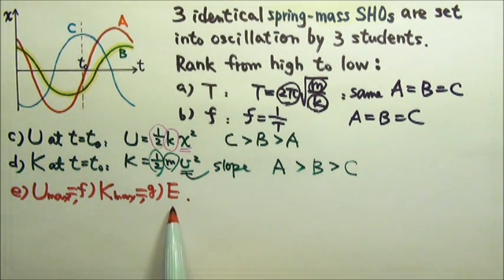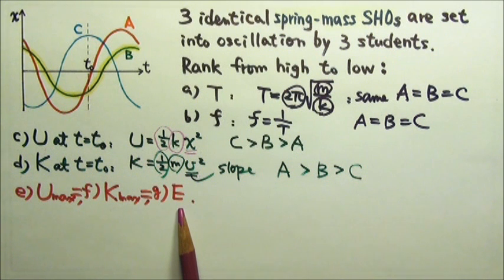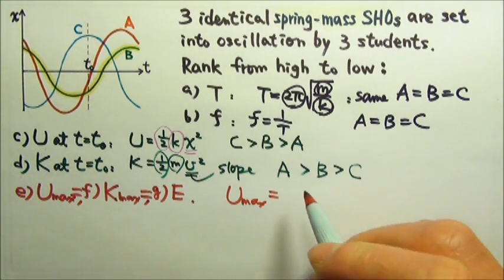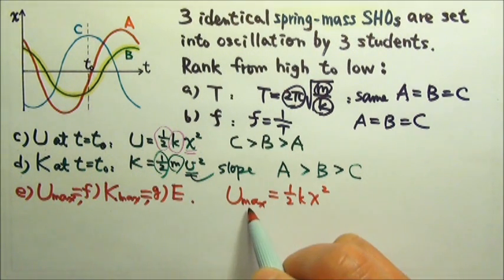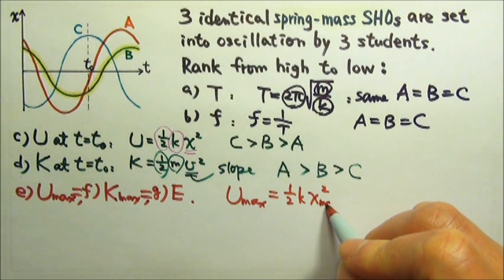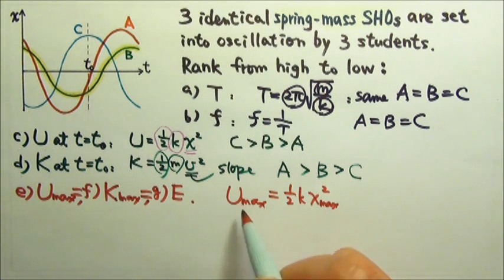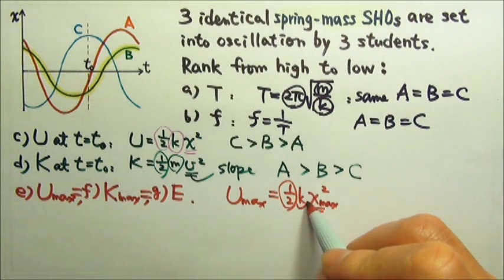To compare these, we just have to pick one of those to compare. With the information we have, which one of these do you think is the easiest one to compare? It's probably the Uₘₐₓ. Let's see, the maximum potential energy stored in the spring is ½kx². And the maximum potential energy happens at the endpoint when the x is a maximum, when the x is the amplitude. So to compare U, we just have to compare the amplitude. Because ½ is always the same, identical spring-mass system means the same k.